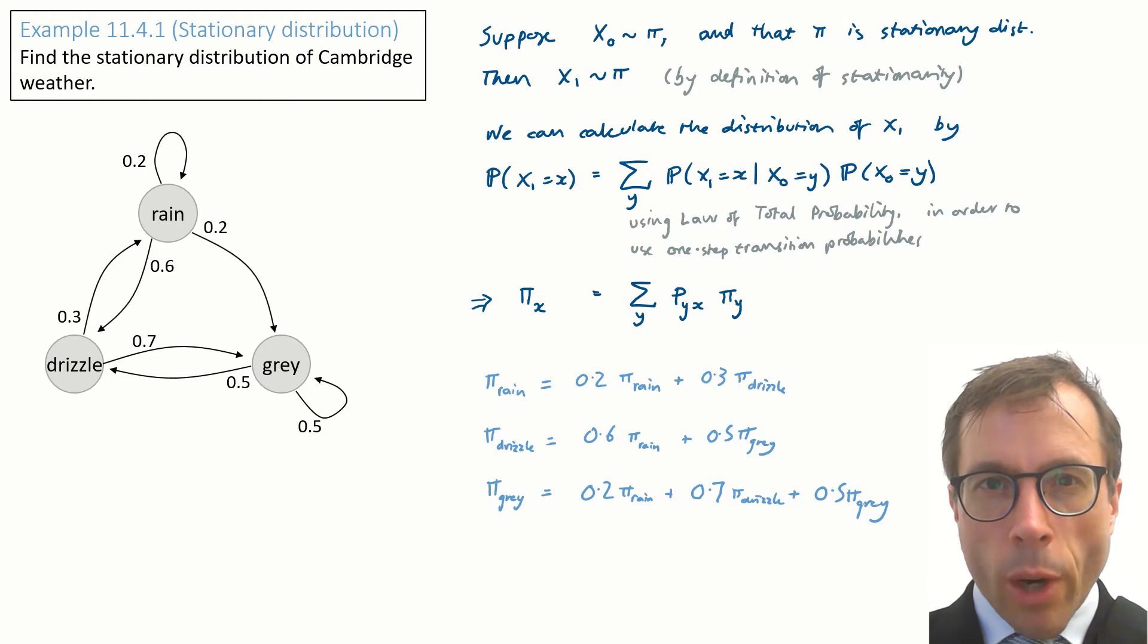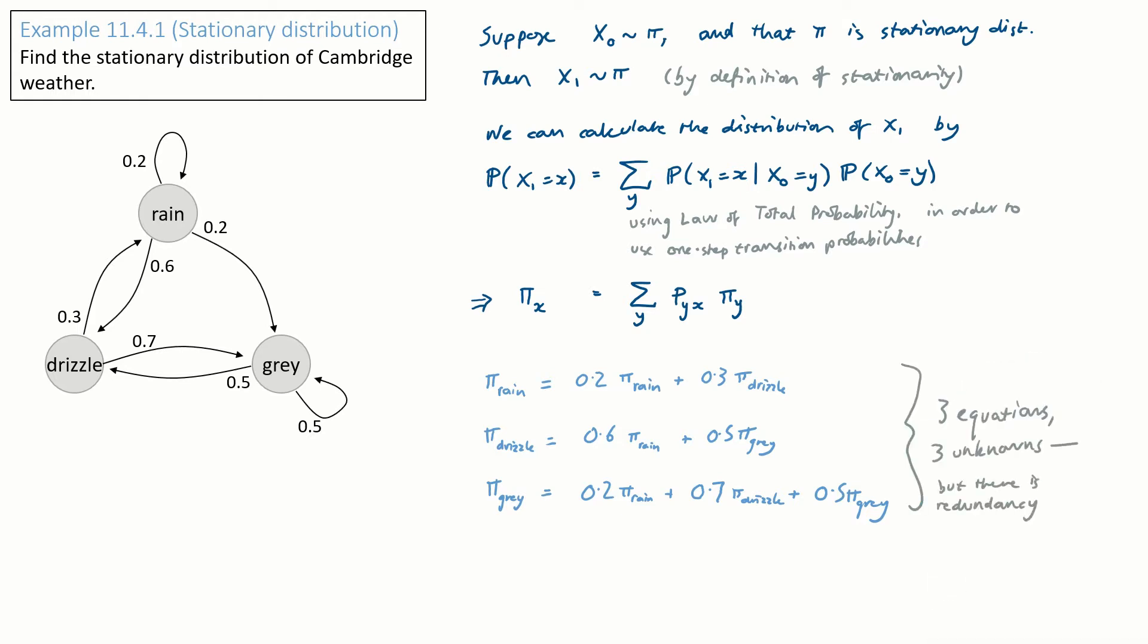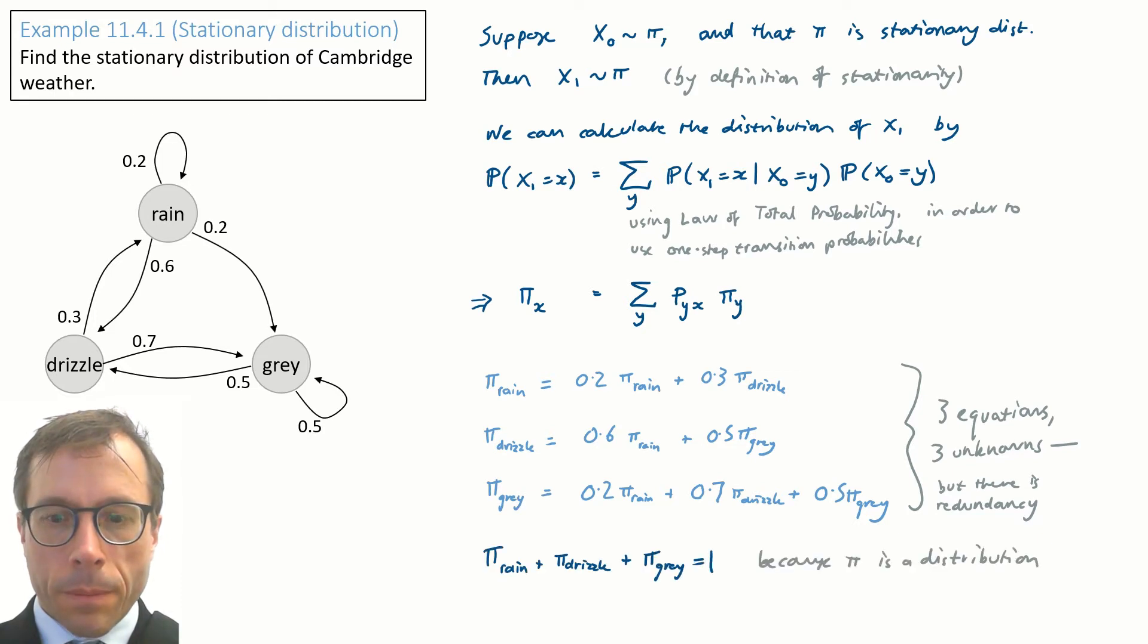Anyway, we have three equations and we have three unknowns, but there is a problem: there's redundancy in these equations. You can see that straight away. In fact, if I have a solution for π_rain, π_drizzle, and π_grey, and I multiply all my three values by 100, I'll still end up with a solution to these equations. In other words, there's nothing in these equations that says π has to be a probability vector. So let's just stick that in as an extra equation. When we do this, we have a set of simultaneous equations that we can solve.